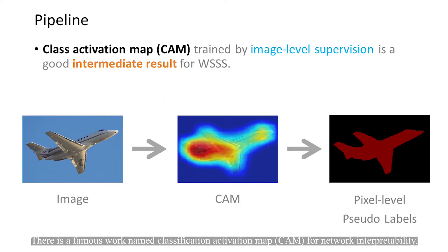There is a famous work named the Classification Activation Map for network interpretability. This work trains a classification network with image-level labels and gets an activation map which can roughly locate objects.